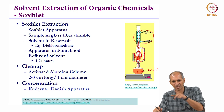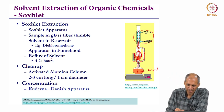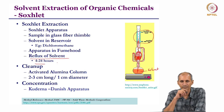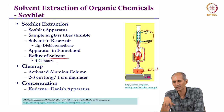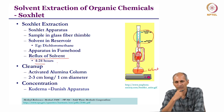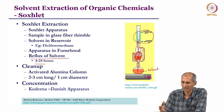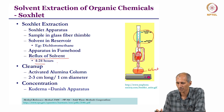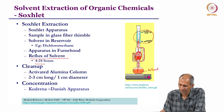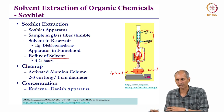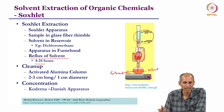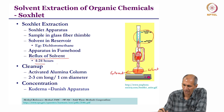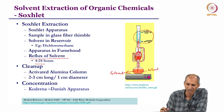Soxhlet extraction is a reflux process — very rigorous, high temperature, and time-consuming, but once packed it runs continuously. At the end, the extract is in the main flask and taken for further processing. However, this method requires a large amount of solvent — perhaps 150 ml or more — because it must evaporate and still maintain a level in the flask. So a rotary evaporator is needed afterward to concentrate the extract.